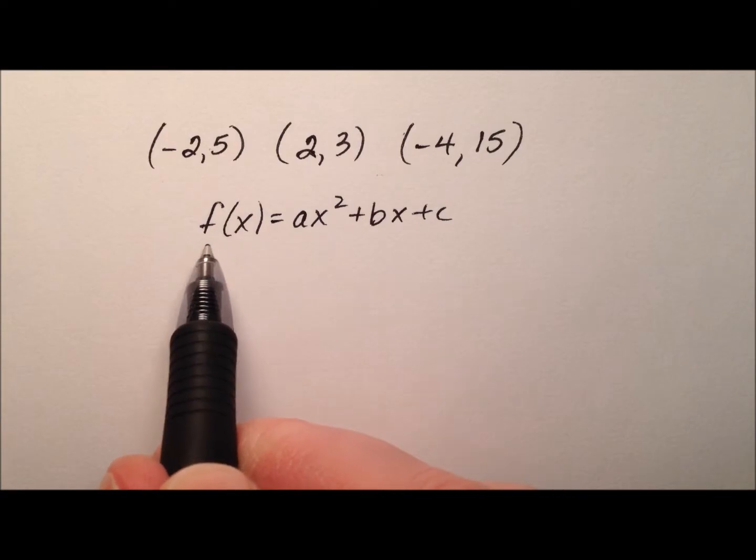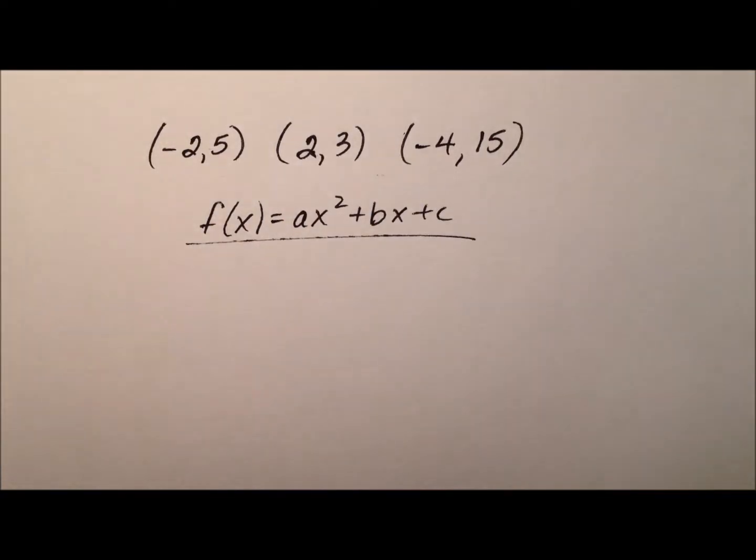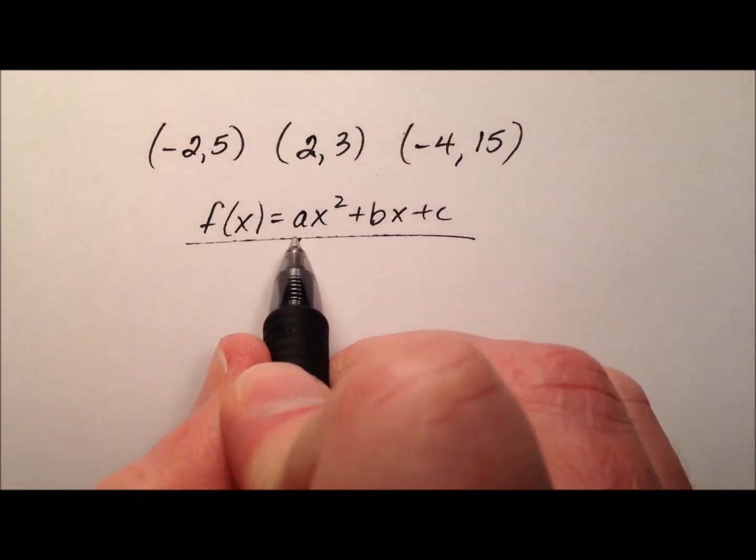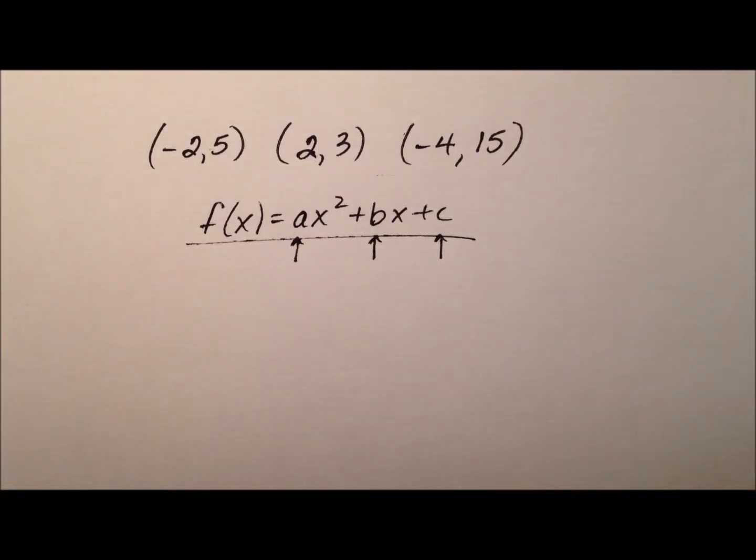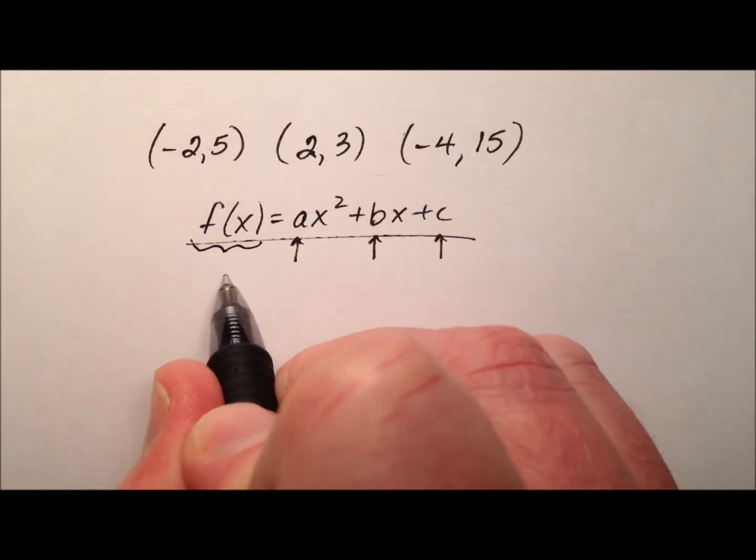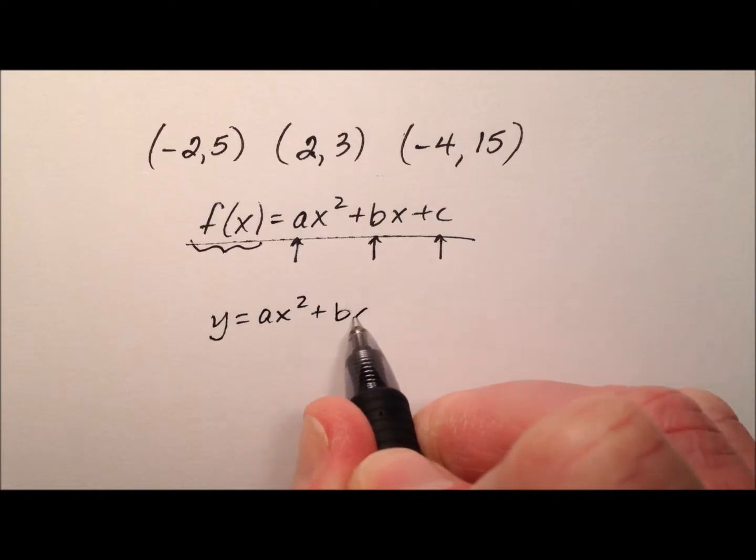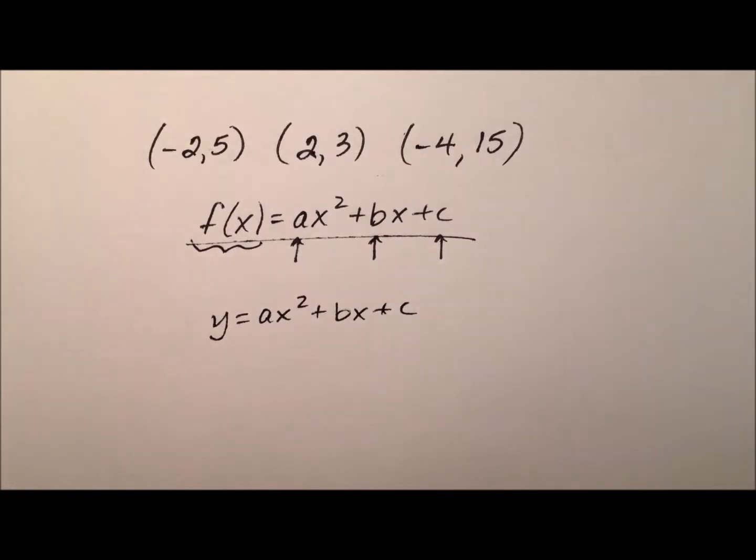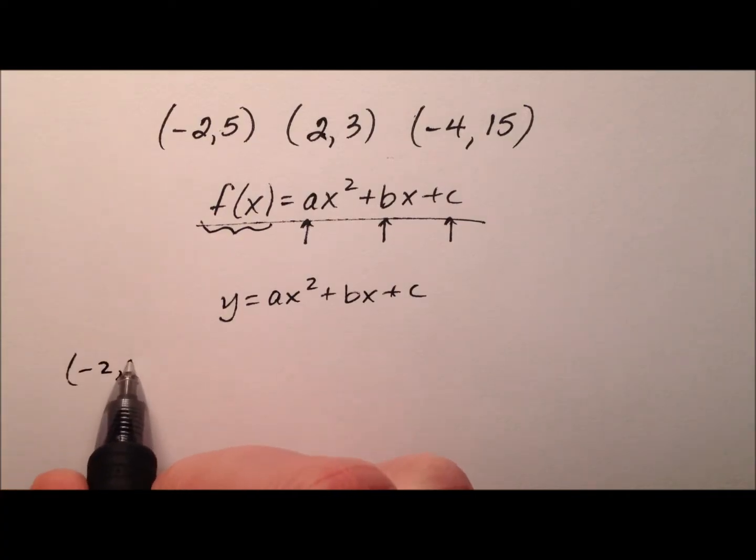I can use this information and each one of these ordered pairs in succession to build a system of equations, which then we can solve. What we'll be solving for are the values of a, b, and c, these coefficients, so I can write them in and have a nice function. We know that f of x can be replaced by y, so we'll have y equals ax squared plus bx plus c. Let's take each ordered pair, starting with (-2, 5).